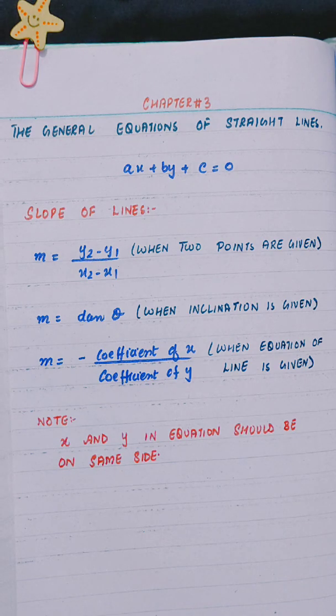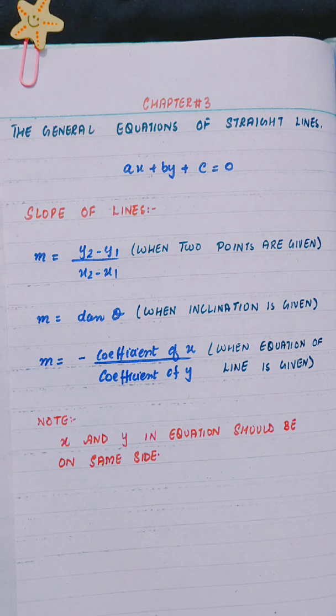The general form of a linear equation is AX plus BY plus C equals to 0.